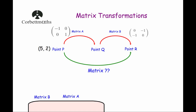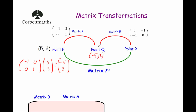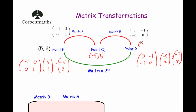Applying matrix A (minus 1, 0, 0, 1) to point P (5, 2): minus 1 times 5 is minus 5, plus 0 times 2 is 0, giving minus 5; and 0 times 5 is 0, plus 1 times 2 is 2. So point Q is (−5, 2). Then applying matrix B (0, minus 1, minus 1, 0) to Q: 0 times minus 5 is 0, minus 1 times 2 is minus 2; and minus 1 times minus 5 is 5, 0 times 2 is 0. So point R is (−2, 5).